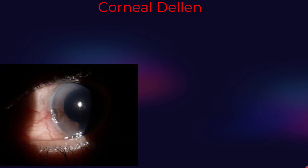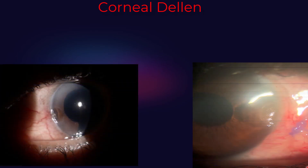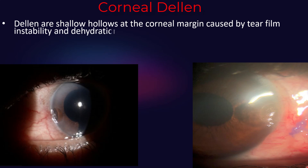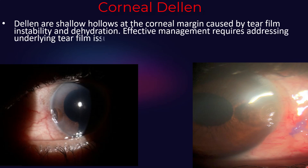Corneal dellen are small, saucer-like hollows found at the edge of the cornea. They usually form an oval shape parallel to the limbus, which is the border of the cornea. This dehydration may result in the formation of corneal dellen, which look like shallow hollows or dimples at the corneal margin.